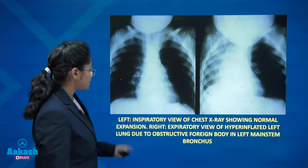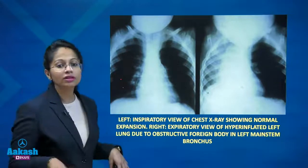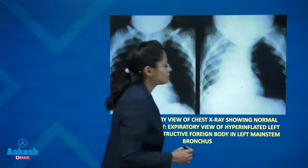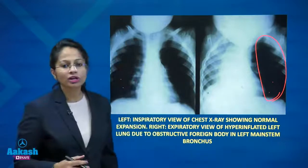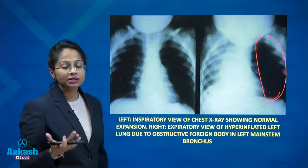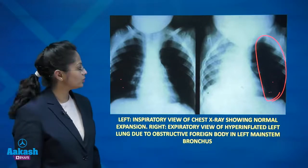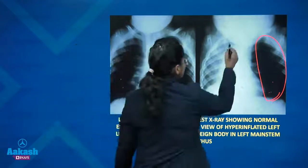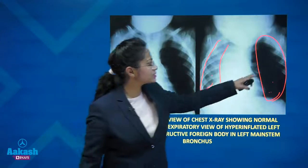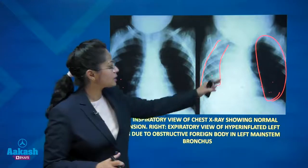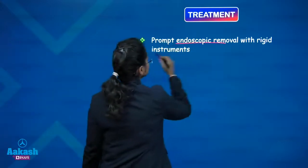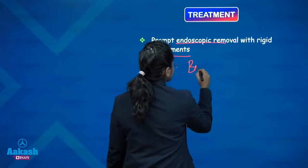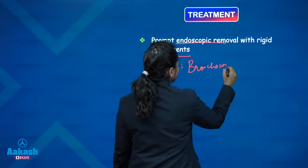On the X-ray: the inspiratory view versus the expiratory view of the chest shows the left side is hyperinflated even on expiration because of the foreign body — air is not able to go out. The right side shows whitening as all the air goes out, but on the left side it is obstructed and hyperinflated. Management is endoscopic removal with a rigid instrument — bronchoscopy is to be done.